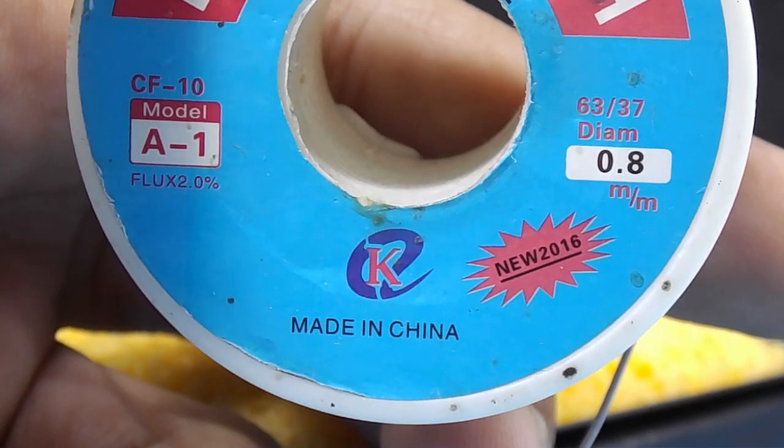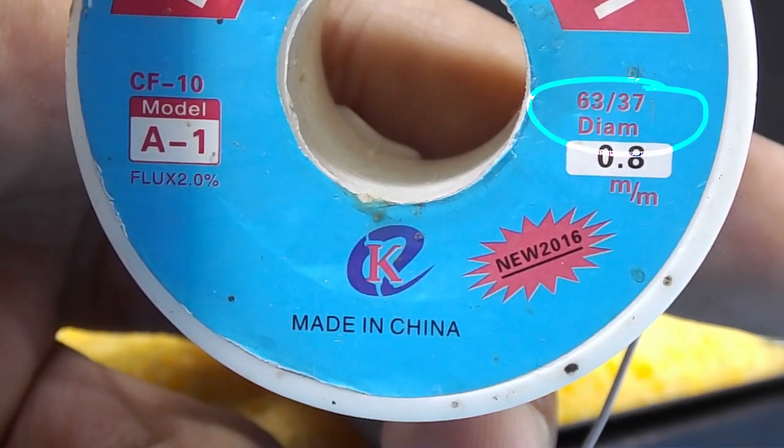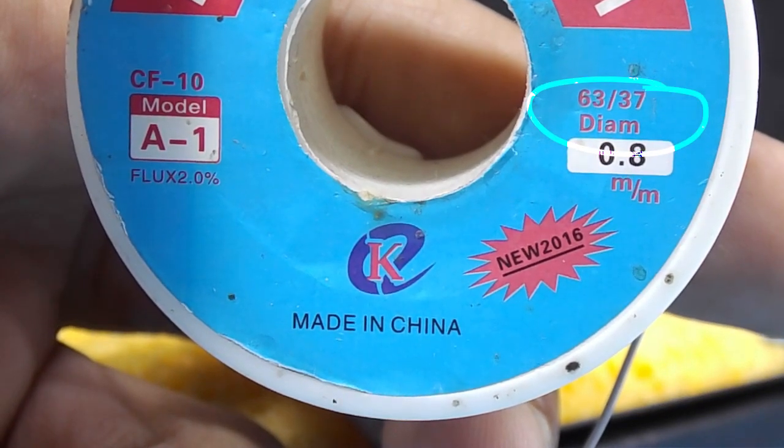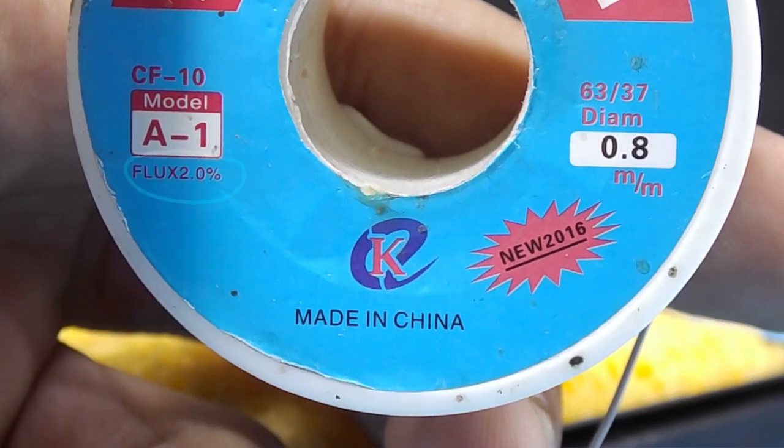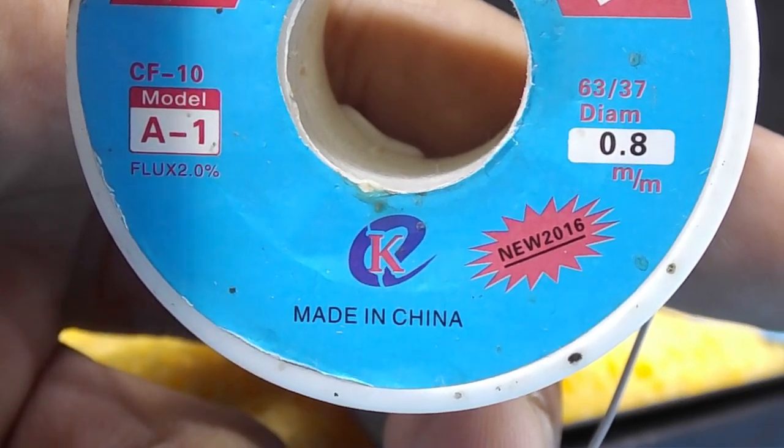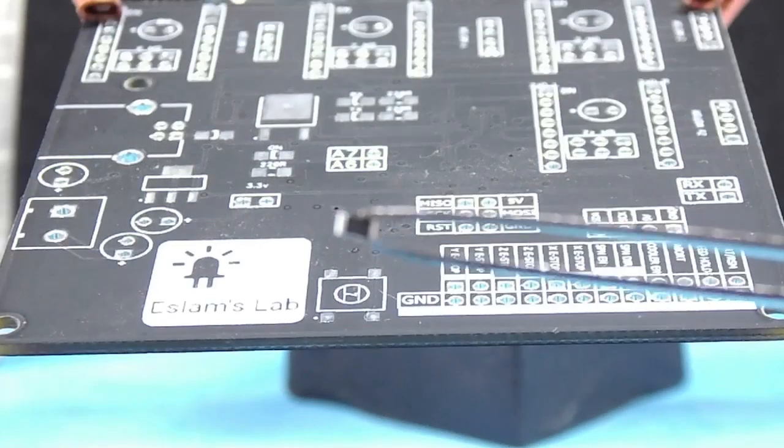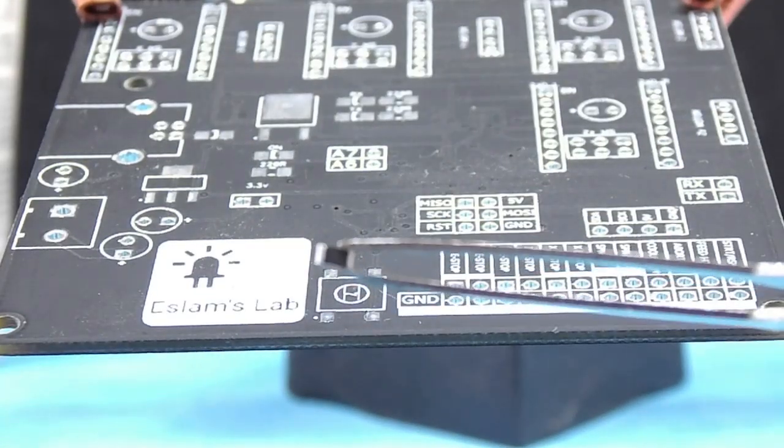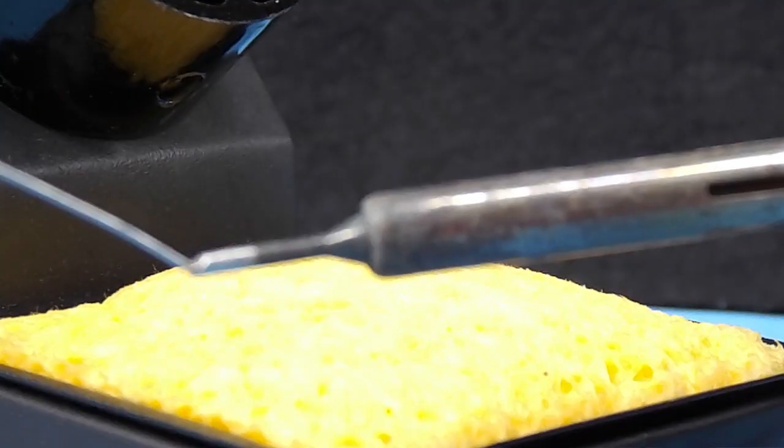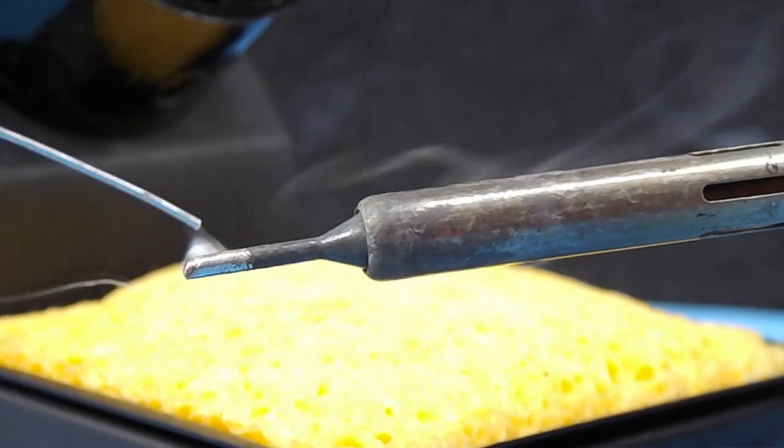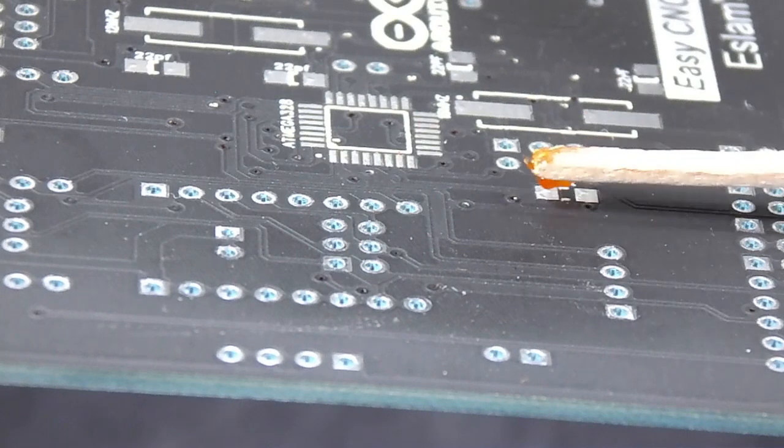Here I'm using 63% tin and 37% lead with 2% core flux that gives nice soldering joints. So, to solder a package like SMD resistor here, I'm adding some tin to the tip and small amount of flux to the board.